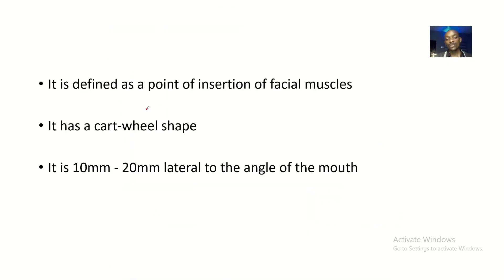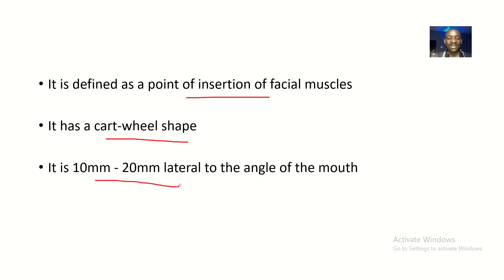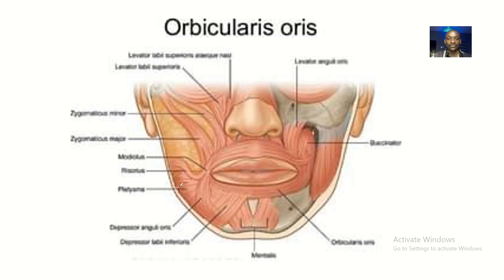The modulus is defined as a point of insertion of facial muscles. It has a cat-wheel shape and is 10 to 20 millimeters away from, or lateral to, the angle of the mouth. This picture is not entirely clear, but when I point something out you will understand.